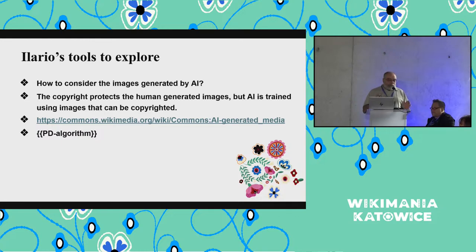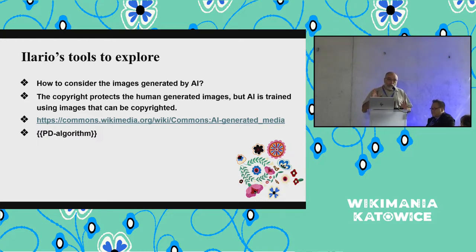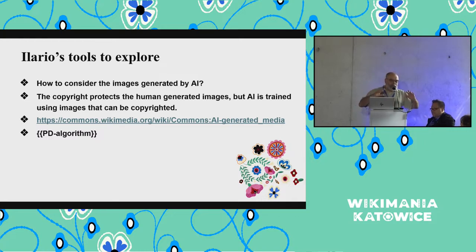What is really important — and this was honestly my key topic — is what happens with copyright for these images. This is a huge problem. I found in Commons a page that gives some answers. You put the template PD-algorithm and it looks to work. I suggest when you generate images, don't start from a copyrighted version — for instance, don't start from Mona Lisa and say 'change Mona Lisa' — start from something more basic.